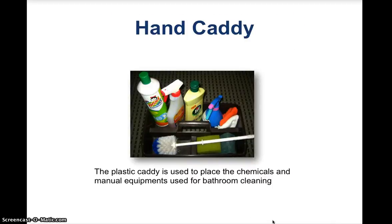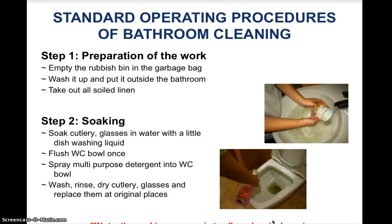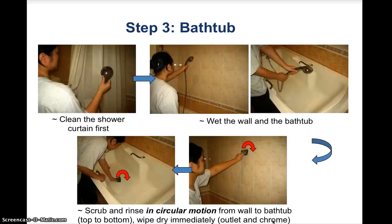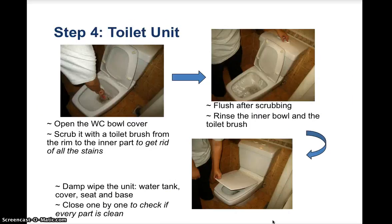The hand caddy holds all bathroom cleaning supplies. For the standard operating procedure: first, bring in any room mugs or coffee mugs and wash them separately. Soak cutlery, glasses, and water items with a little dishwashing liquid. Flush the WC bowl and spray multipurpose cleaner and allow it to soak. Then wash, rinse, and replace the cutlery and glasses at their original place. For the bathtub, clean the shower curtain first, wet the wall and bathtub, scrub in circular motion from wall to bathtub, rinse, and wipe dry immediately.